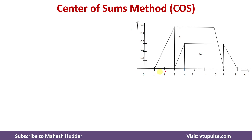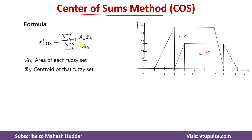To discuss these methods, I am considering this problem. Here we have two fuzzy sets A1 and A2. First I will consider the first method, that is the center of sum method. In this method, to calculate the crisp value, we are using this formula: summation of k equals 1 to n of ak into xk-bar, divided by summation of k equals 1 to n of ak. Where ak is the area of each fuzzy set, xk-bar is the centroid of that fuzzy set, and n is the number of fuzzy sets.